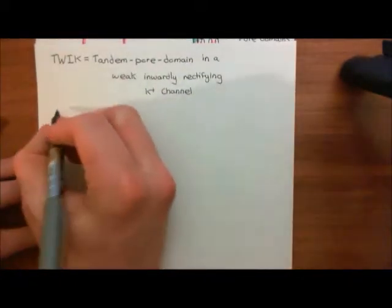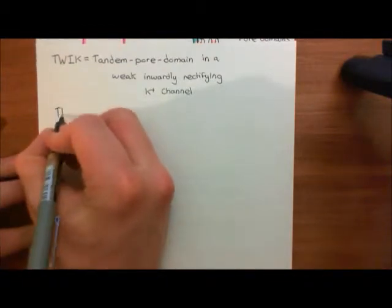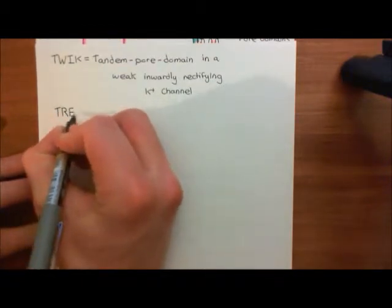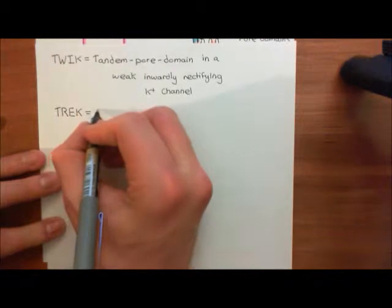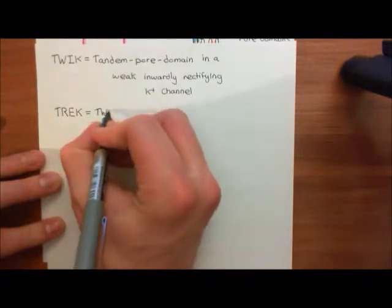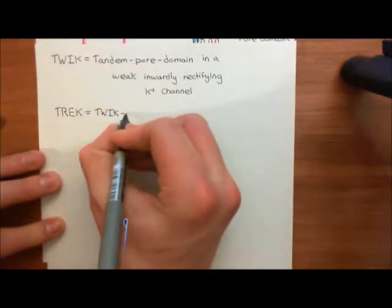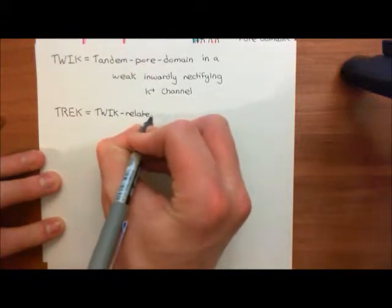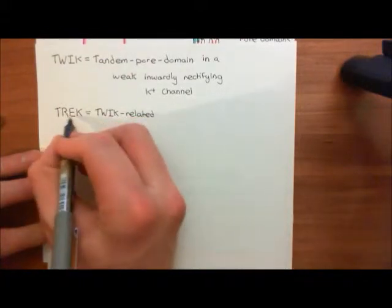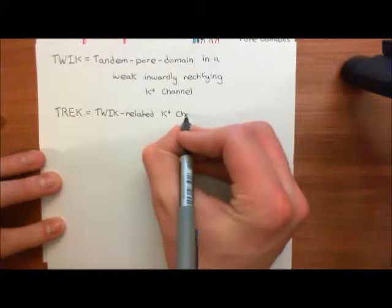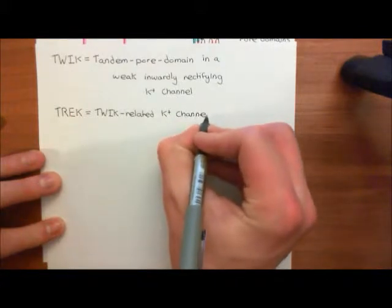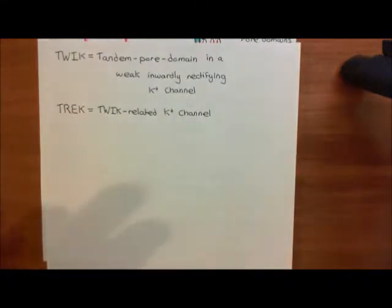The next name is TREK proteins, or TREK subunits. TREK stands for TWIK-related potassium channel. The T is for TWIK, the RE is for related, and the K is for potassium channel. We now want to see which of these two pore-domain potassium channel subunits are known as TREKs.